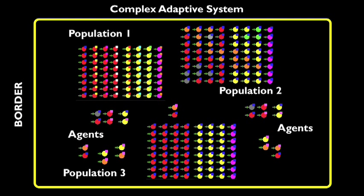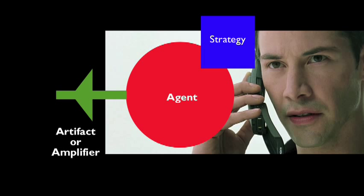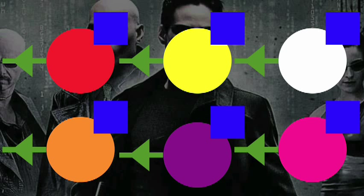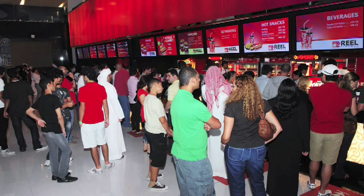The border defines the space where agents interact. Here, a red ball represents an agent. The blue square represents the agent's strategy. Agents can also possess tools or artifacts or amplifiers of some sort, here represented by the green arrow. Agents can be viable systems themselves. Agents may be grouped into types, into populations according to any or several of their characteristics. For instance, all these people are agents in a population of moviegoers within the entertainment complex adaptive system.